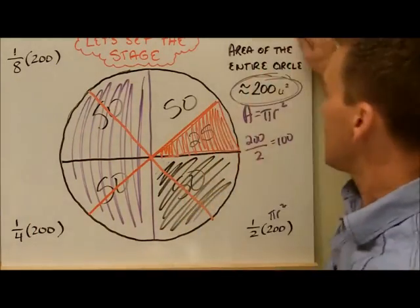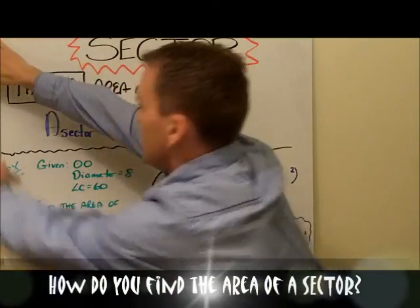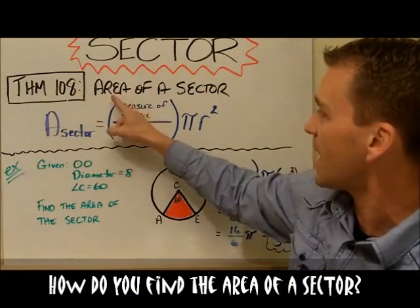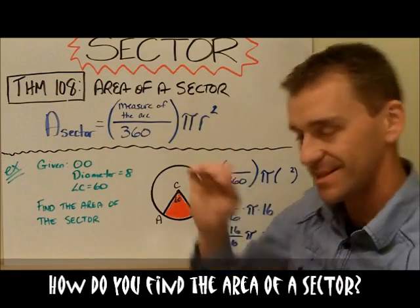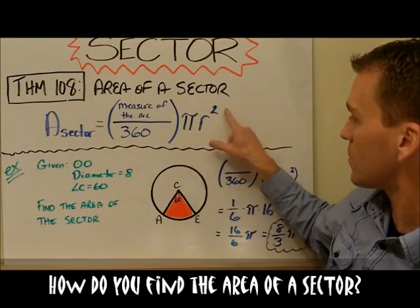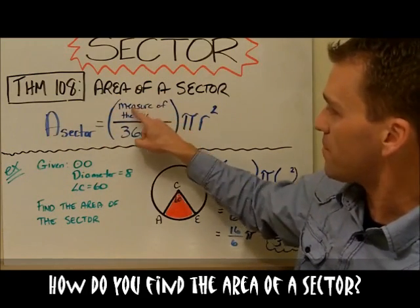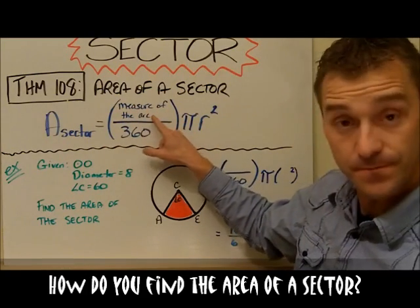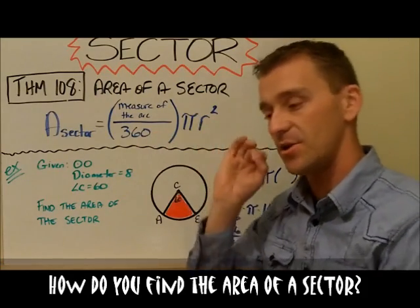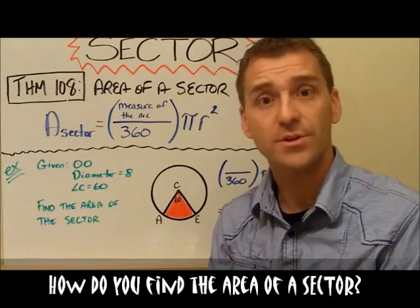So here's how you find the area of a sector. The actual formula, theorem 108, says the area of a sector, this is exactly how you find it. You take pi r squared. That's the area of a circle, and here's the fractional piece that I was telling you about. You find the measure of the arc, and you put that over 360, and that's going to tell you exactly what the fraction of the circle that you're looking at.